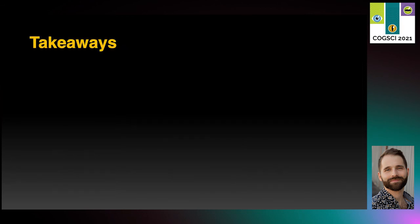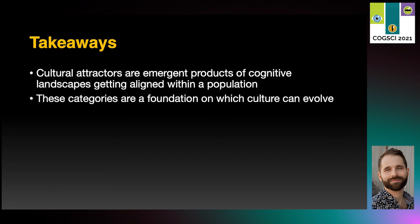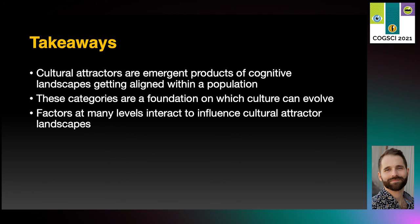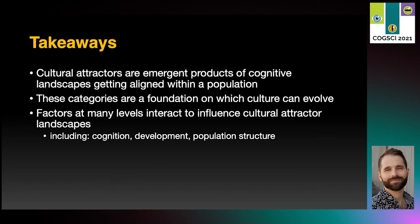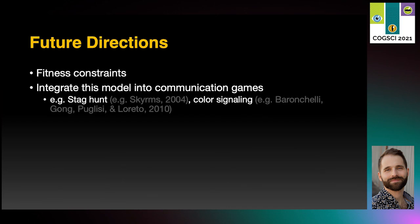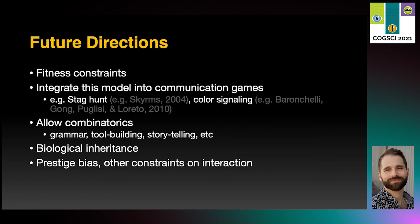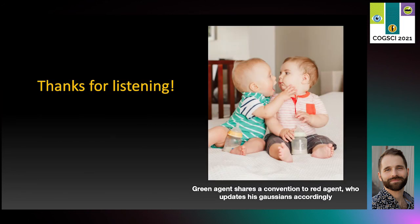Here are the key takeaways from this talk. The first is that cultural attractors are emergent products of cognitive landscapes getting aligned within a population. These categories act as a foundation on which culture can evolve, and factors at many different levels interact to influence the dynamics of a cultural attractor landscape — including cognition, development, and population structure. Some future directions include the addition of fitness constraints, integrating our model into communication games, allowing agents to produce combinations of categories to study things like the emergence of grammar, tool building, and storytelling, allowing for biological inheritance of cognitive capacities, and examining prestige bias or other constraints on interaction. Thank you for listening, and I look forward to your questions.